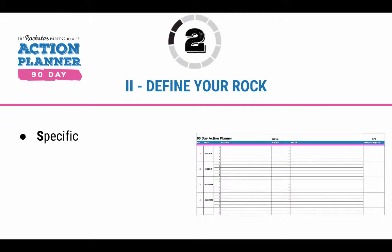The goal should be specific — clearly defined so you know exactly what it is that you're trying to achieve with the rock. It should be measurable; you want to make sure that if you're taking actions on a regular basis, you're making progress to achieve the goal. Attainable — you want to set goals that are realistic and achievable. It does you no good to set goals so high that you cannot achieve them. However, you do want to stretch and challenge yourself to go a little bit harder and do something a little bit bigger so you can get better results.